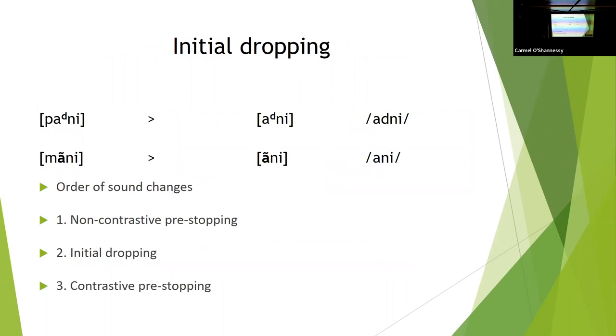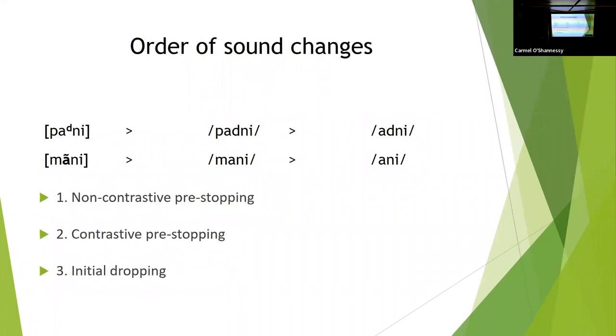Now initial dropping, initial dropping is quite a widespread and discontinuously distributed change in Australia. And along with everybody else who'd ever looked at the interaction between initial dropping and pre-stopping, I had always assumed that essentially the order of development was that you have non-contrastive pre-stopping. Then you get initial dropping. And once you get initial dropping, you've lost the conditioning factor and therefore you develop contrastive pre-stopping, which had always been my assumptions as to the order. Working with Jane on Arabana, I came to realise there were problems with that.